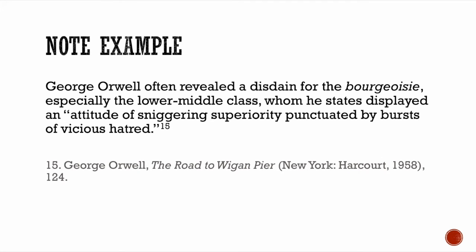Here's an example. George Orwell often revealed a disdain for the bourgeoisie, especially the lower middle class, whom he says displayed an 'attitude of sniggering superiority punctuated by bursts of vicious hatred.' And there's a citation — notice the citation is superscripted in the text. But in the note itself, whether footnote or endnote, the number is not raised; it's the same size as the font. Then it's his name in first name, last name order, comma, the book's title — The Road to Wigan Pier — in parentheses, the facts of publication: published by Harcourt in New York, with place of publication, colon, house of publication, comma, date, close parentheses, comma, and then the page number where that quote is found. And it's really that simple.